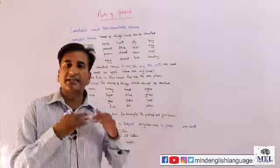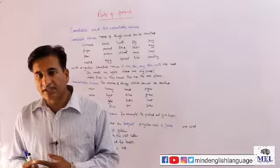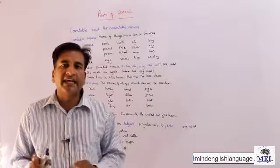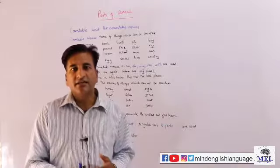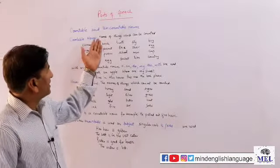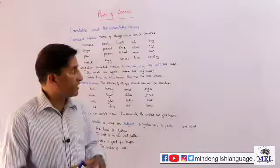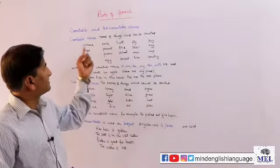Countable nouns are what we can count. What are the examples? Names of things which can be counted. Countable nouns are what we can count.